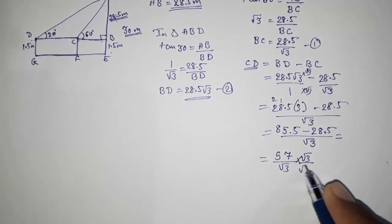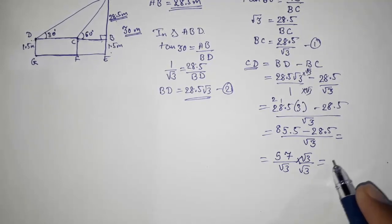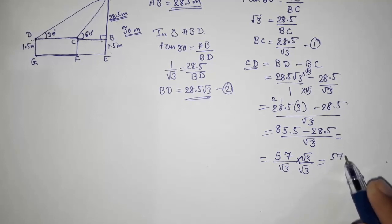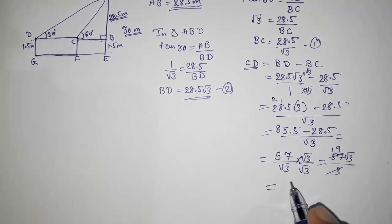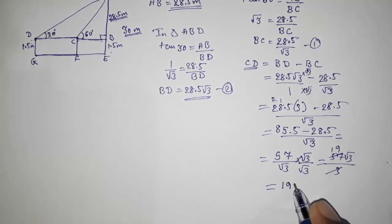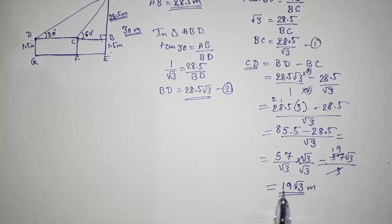So 57 root 3 by 3. We can cancel this. This will become 19. So our answer is 19 root 3. So the distance walked by the boy towards the building is 19 root 3 meters.